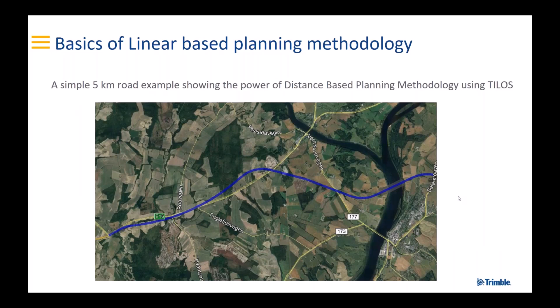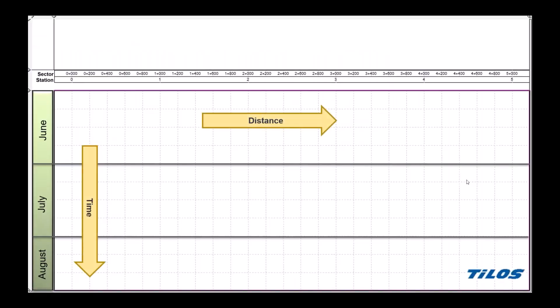For the last part of the webinar, we'll look at the simplest project ever — a five-kilometer road, which you can see here as the blue alignment on a Google Earth picture. The first thing we do in Tilos is define the time-distance space: time across June, July, August, and distance in kilometers — one kilometer, two kilometers, three kilometers, and so forth.